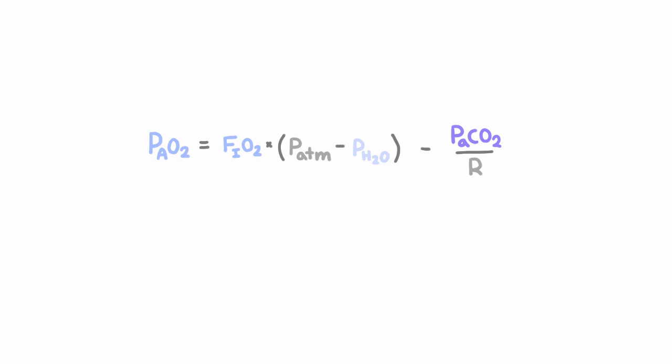but for patients breathing ambient air at sea level, it can be simplified a lot because FiO2 is 0.21, atmospheric pressure is 760, and pH2O is 47. So if you work out the math, this first term becomes about 150. And then the equation can be simplified to just 150 minus PaCO2 divided by 0.8.